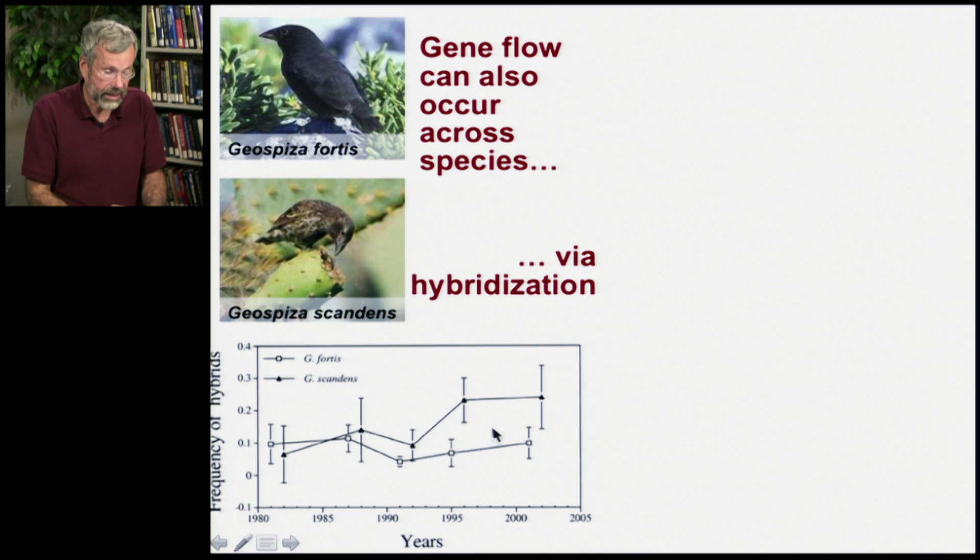Now, between the 1980s and the first part of the century, there has been a very low but persistent amount of interbreeding or hybridization. So scandens has had between about 5 and 20 percent of its marriages, as it were, were with the other species, with fortis. Fortis is a more common species on the island, and so it's only between about 5 and 10 percent of their marriages are with the other species.